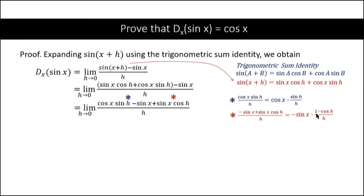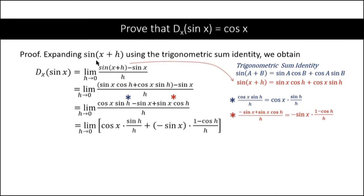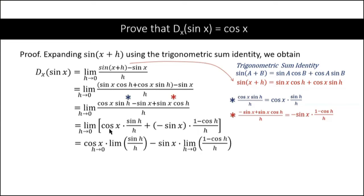After factoring, we get negative sine x times (1 minus cosine h over h). Substituting this in, we now have the limit of cosine x times sine h over h, plus negative sine x times (1 minus cosine h) over h. We then distribute the limit as h approaches zero, giving us cosine x times the limit of sine h over h as h approaches zero.